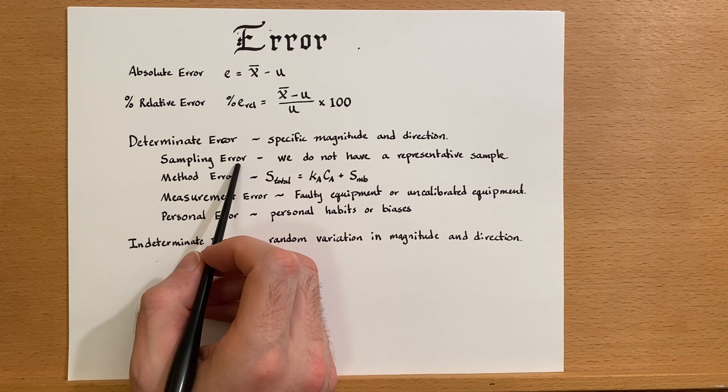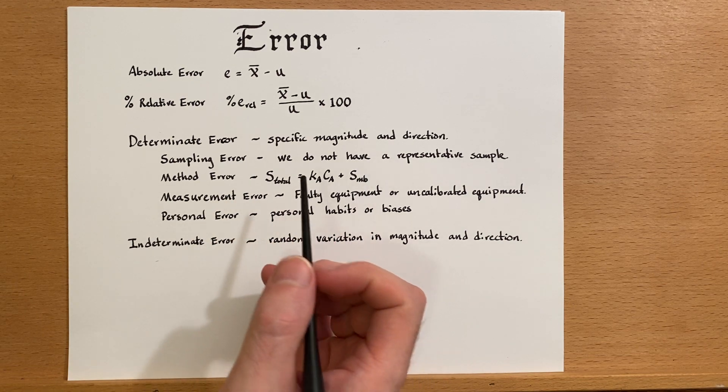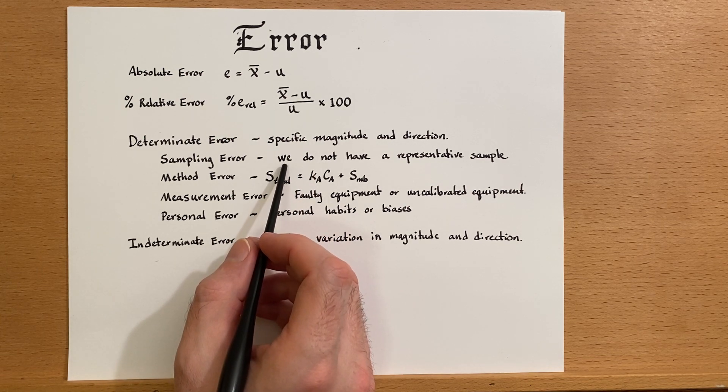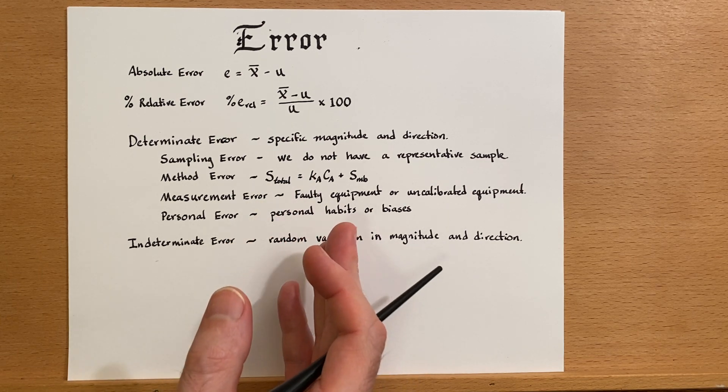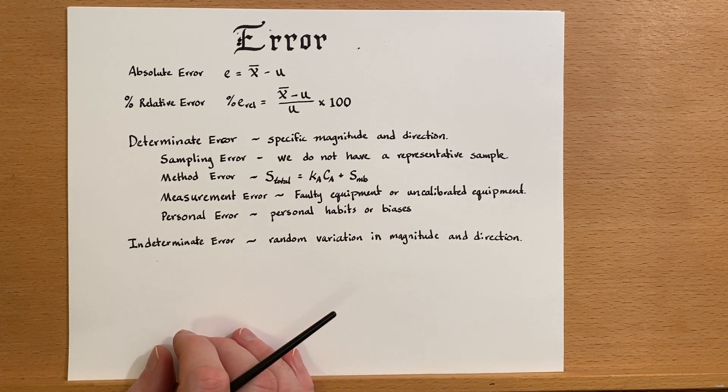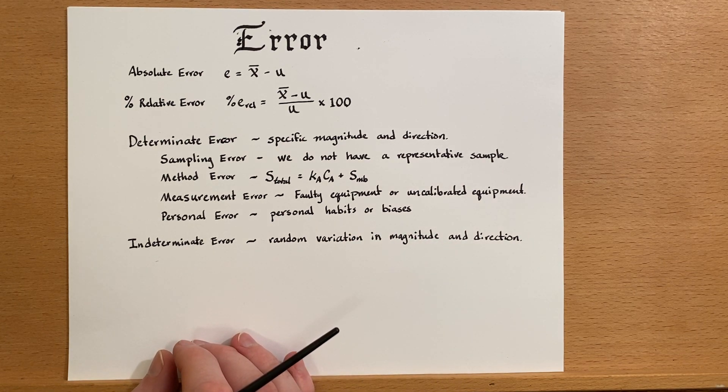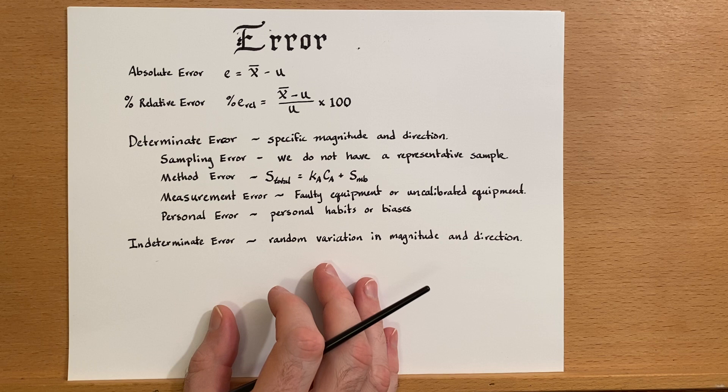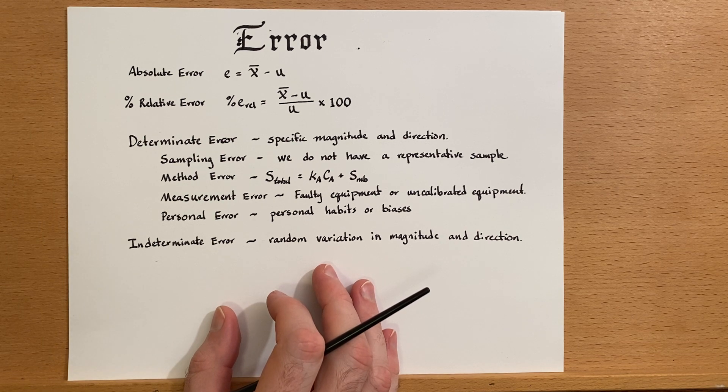Now what are some of the ways that determinant error could be introduced into our analysis? Well, one way is sampling error. We have to be careful that we actually have a representative sample of whatever we want to measure.